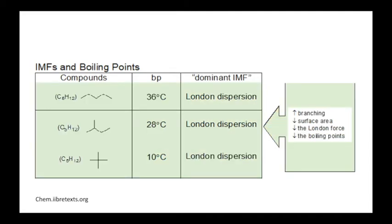In the next example, we're looking at boiling points in molecules that are all the same size but have different shapes. The more branching there is, the weaker the London dispersion forces are.